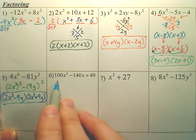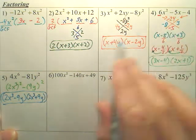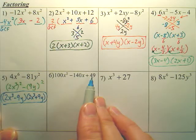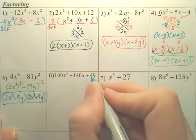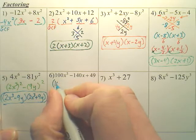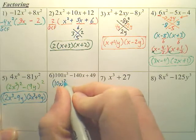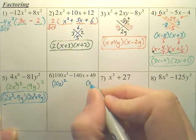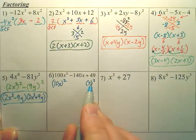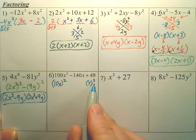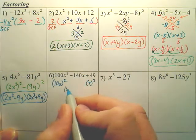Now, this looks a lot like this one right here, except I don't want to sit here and go 100 times 49. But what you should notice is these are squares. And if those are squares, there's a shortcut. If these are both squares, you take the 10x, multiply it by the 7,